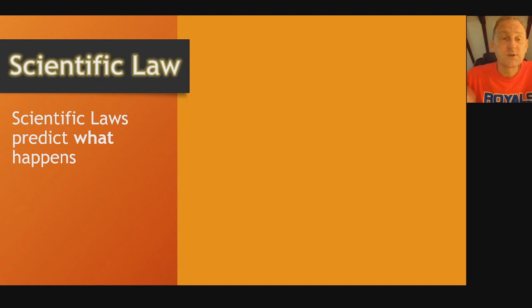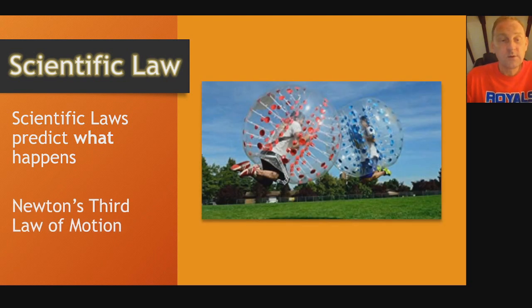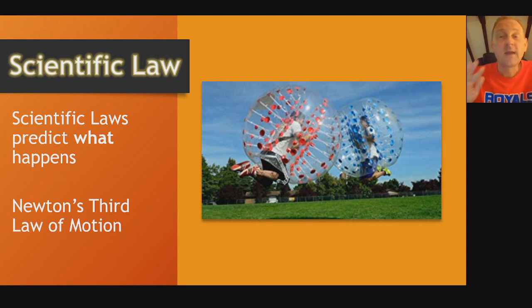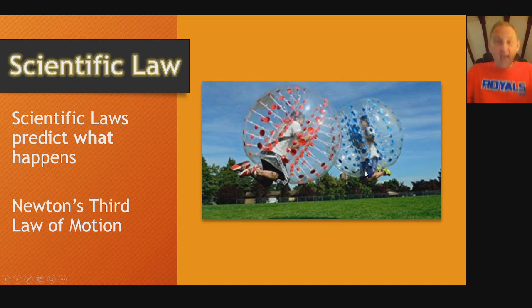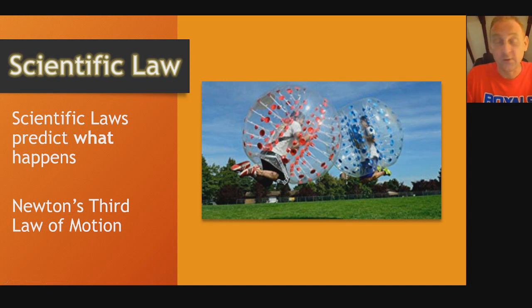The last thing I want to talk about is scientific law. Scientific laws predict what happens. Newton's third law of motion is every action has an equal and opposite reaction. That's Newton's third law of motion. If you guys have ever seen these big balls or something like that, these two people are jumping at each other in these big blow-up balls, and I think you would know what's going to happen in the next frame or two. They're going to hit each other, and they're going to go bouncing off each other quite hard because every action has an equal and opposite reaction, and I think those bouncing balls are a great example of that.